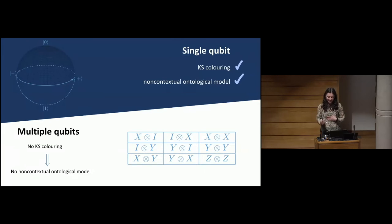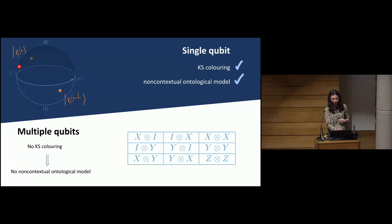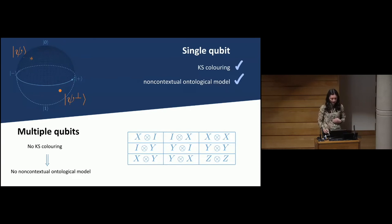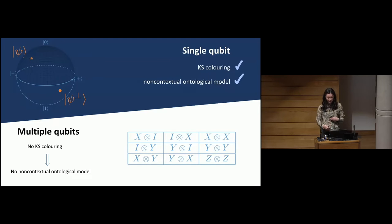What's the case for a single qubit? For a single qubit, we do actually have a KS colouring for all bases. This is easy to see: every basis is formed by one point on the Bloch sphere plus the opposite point. A consistent assignment is to assign one to everything in the northern hemisphere and zero to the southern hemisphere. But for multiple qubits, there is no KS colouring of all bases, and that implies there is no non-contextual ontological model of the Kochen-Specker kind.